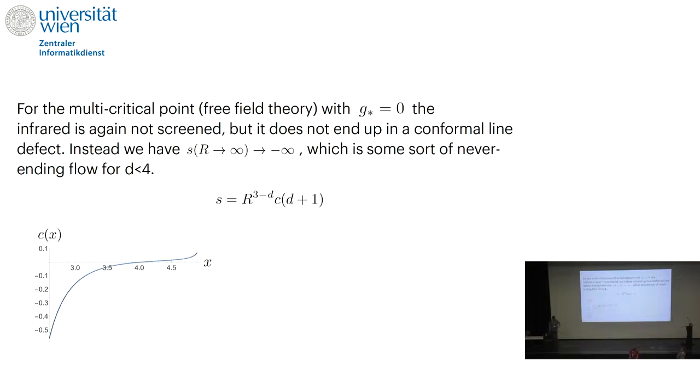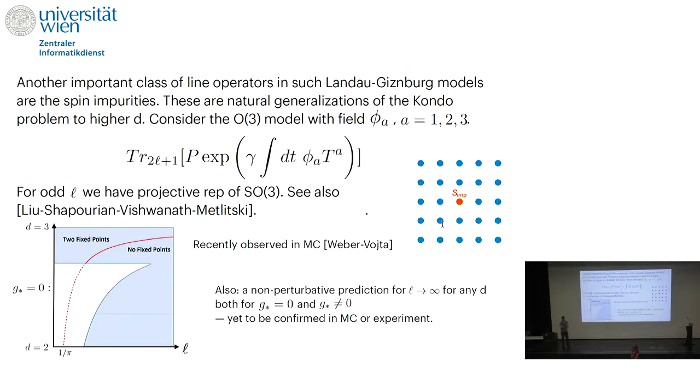You showed us this fixed point structure where you had two fixed points then they merge and then they disappear in the complex plane. Yes exactly they disappear into the complex plane. So if this happens then generically there is a BKT-like transition? Yes we claim that this line defect has a BKT-like transition. For, and it was recently seen in Monte Carlo with some precision. But that's the main claim, that this is the behavior as a function of the spin of this line. As you increase the isospin there is a BKT transition.